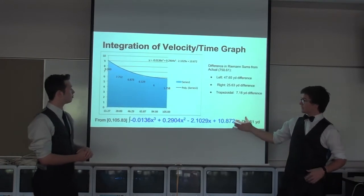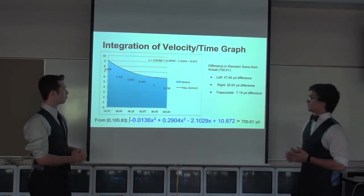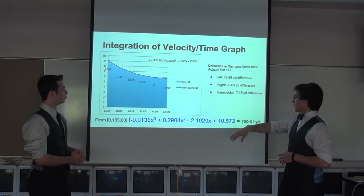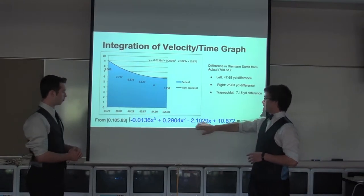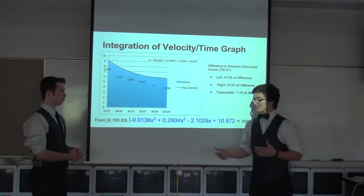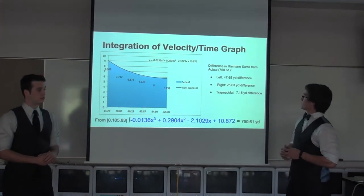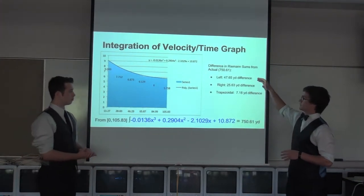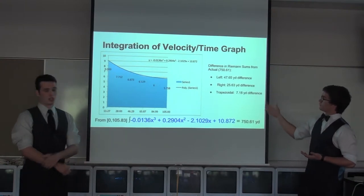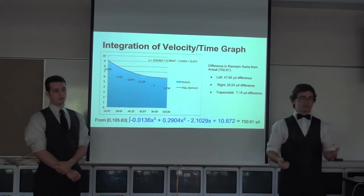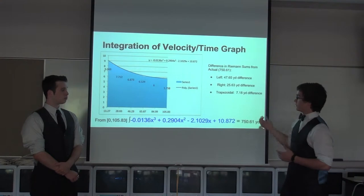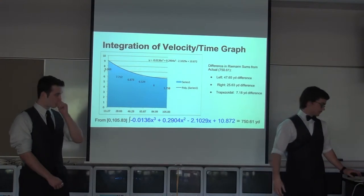This is the actual integration of that same graph. This is the cubic function, and we're running it from 0 seconds to 105.8 seconds. This shows the differences: the difference in the left Riemann sum was 47, right was 25, and trapezoidal was only 7. It just shows how much more efficient the trapezoidal is than the left and right Riemann.